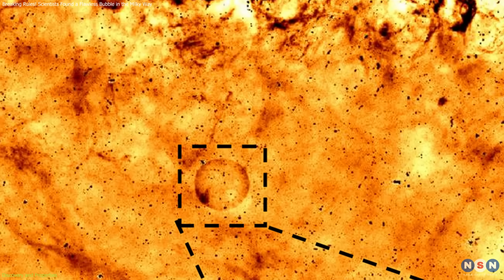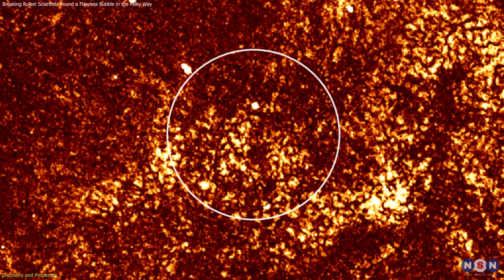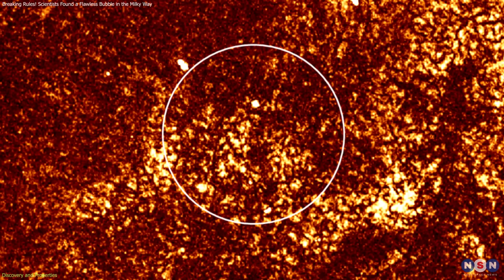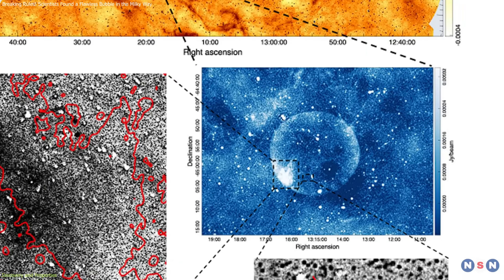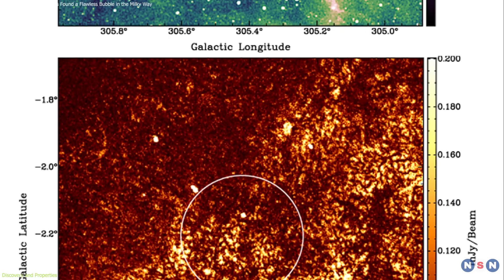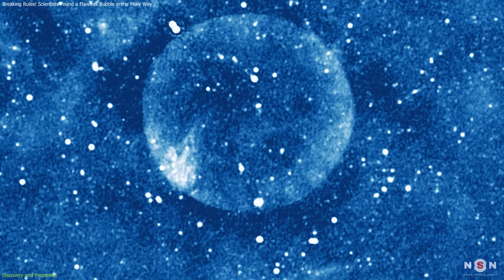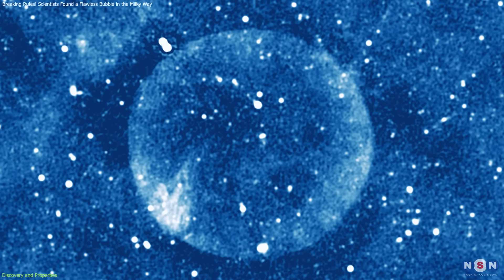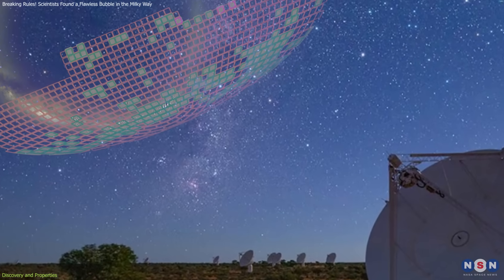It's rare to find theory mirrored so closely in observational data. Another striking feature is its extremely low surface brightness. It is detectable only in the radio band. It shows no emission in X-ray, infrared, or visible light. This radio-only profile is part of why it was overlooked until ASKAP's sensitive instrumentation scanned that region of the sky.